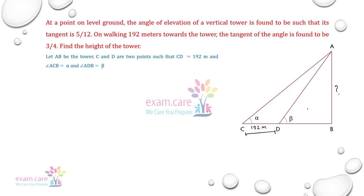ठीक है, पहले हम लोग triangle ABC लेते हैं। इसमें जब tan alpha निकालेंगे, तो tan alpha is equal to AB by BC। और tan alpha, C point से 5 by 12 दिया हुआ था। तो 5 by 12 is equal to AB by BC, तो AB is equal to 5 by 12 BC।